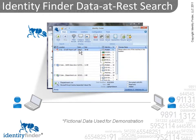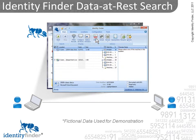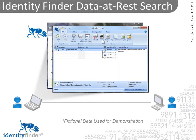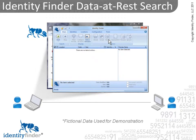If you don't need the file, you can permanently shred it. If you need to keep a text file but wish to redact the sensitive information inside it, just click the scrub button. Identity Finder will automatically redact sensitive information, such as social security numbers or credit card numbers, replacing them with X's. Or you may quarantine or encrypt the file. Your information is now protected.